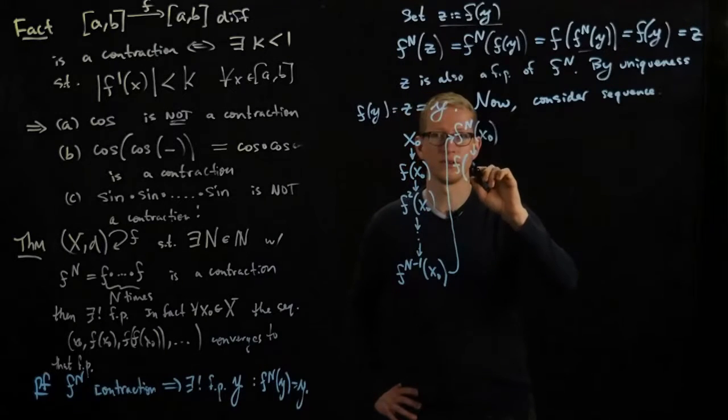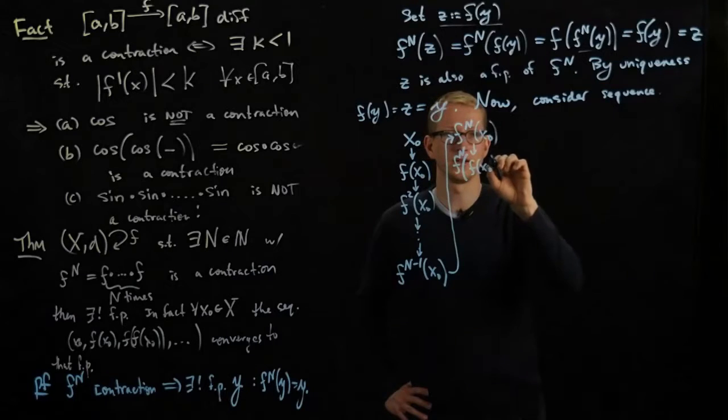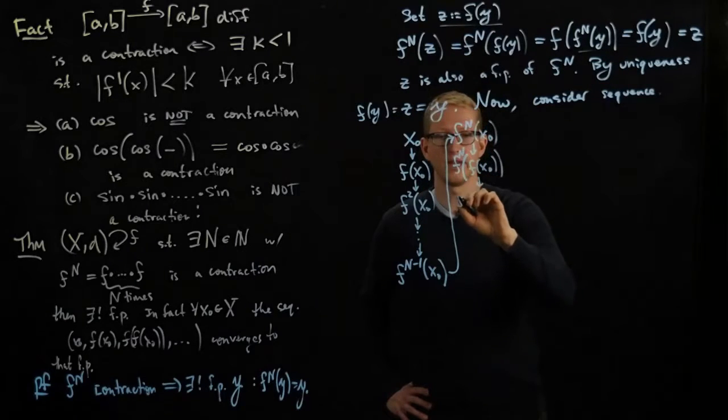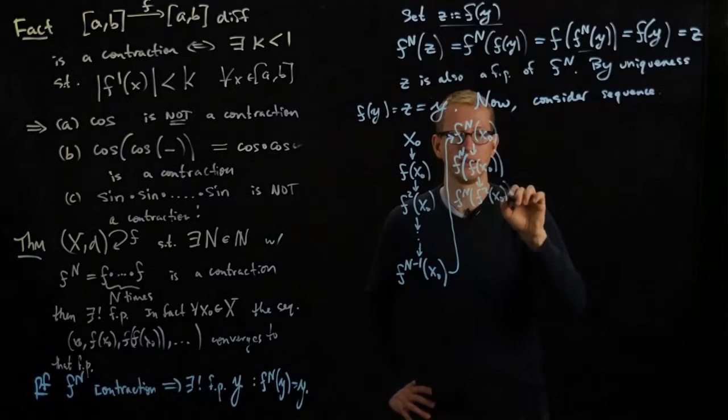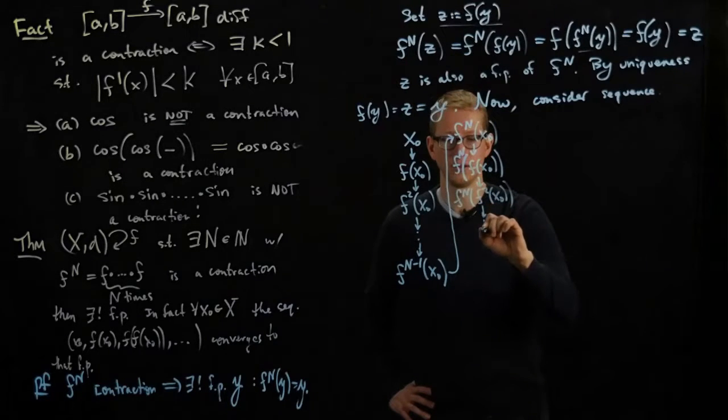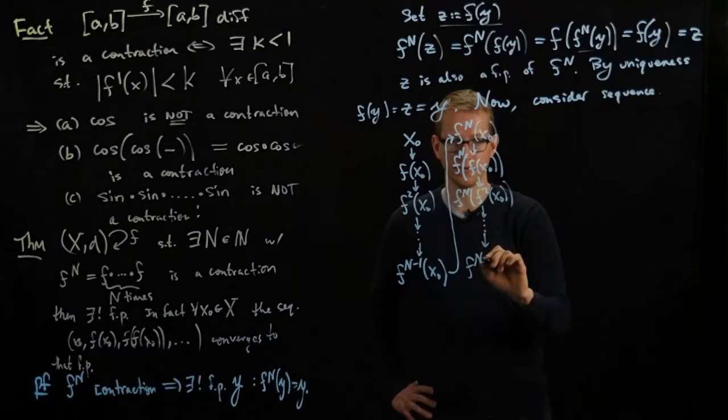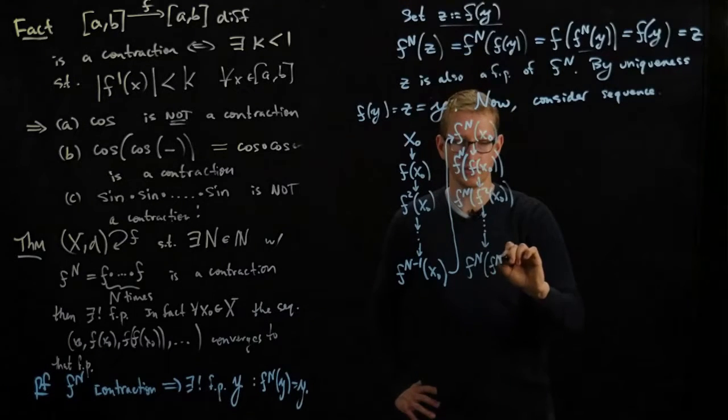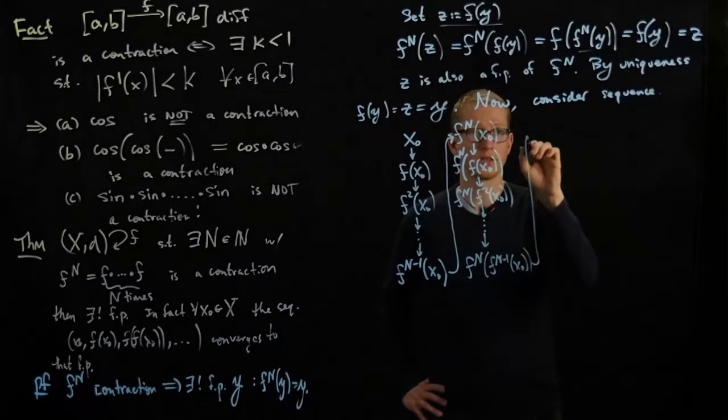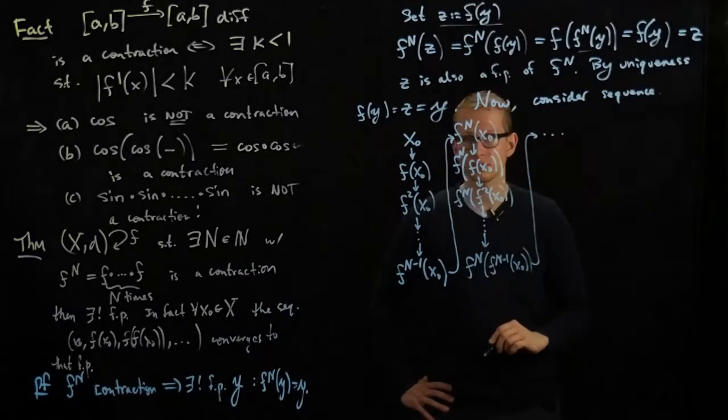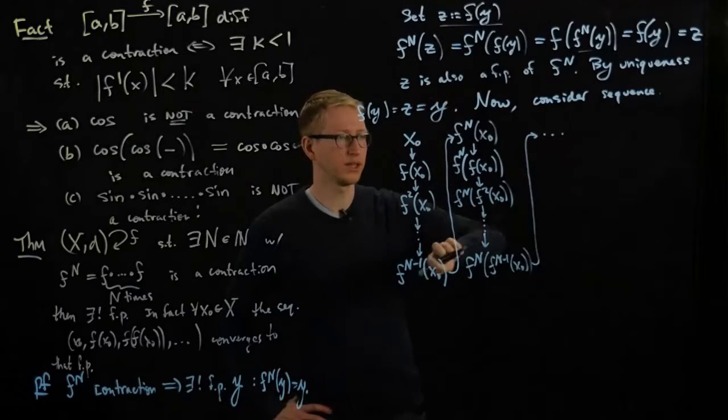This is f of—sorry, f n of f of x0, and then this is f n of f squared of f of x0, and so on. And hopefully you get the idea now. This is f n f n minus 1 x0, and keep going.